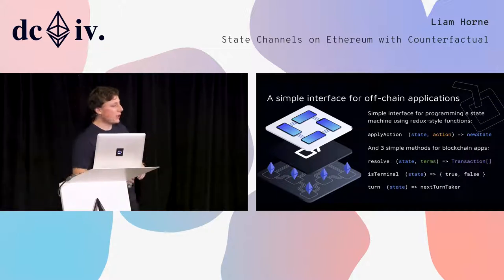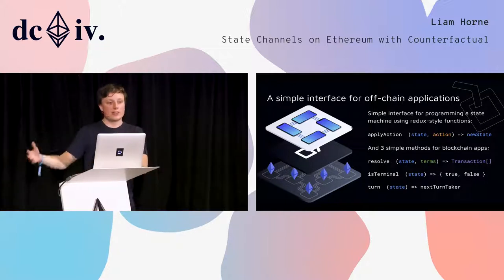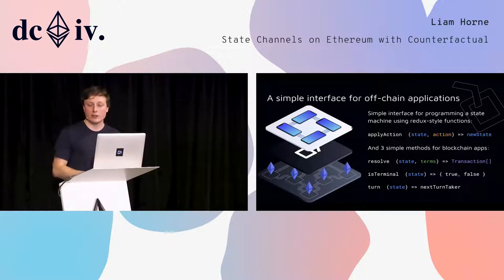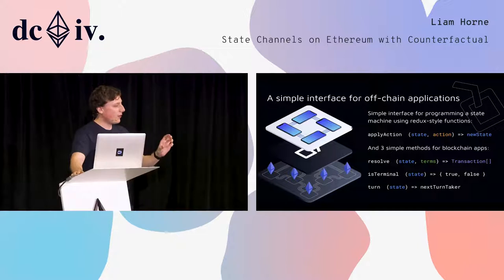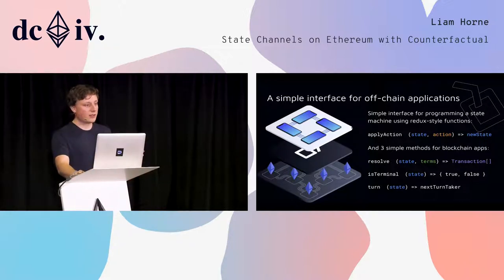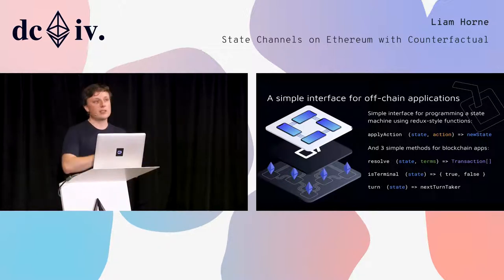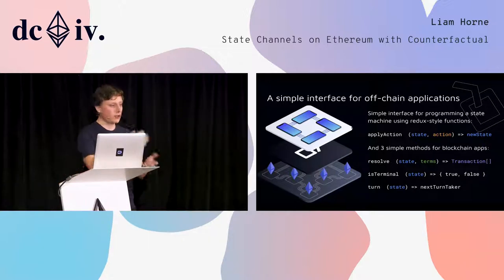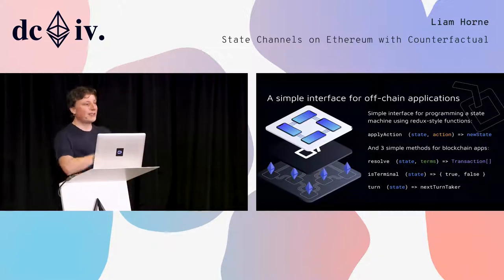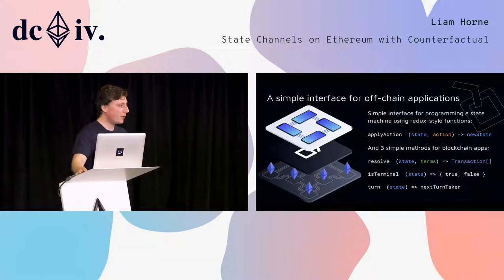Separately from the generic on-chain components, we've created a very basic state-machine-based library. As seen from the first presentation, the optimal way of describing applications is: state, action, new state. This is how we're assuming someone will design their application. We support this out of the box and have added three very simple methods: a resolver that takes your state and the sub-deposit pre-commitment and figures out what transactions need to be made; an is-terminal clause that says is this game over; and a turn-taking mechanism that defines whether an update is valid.